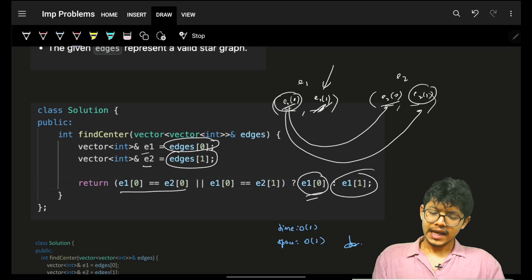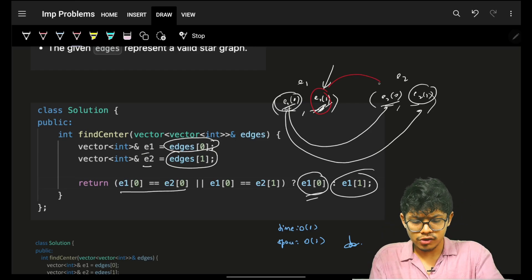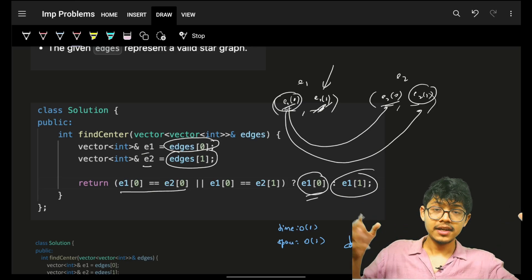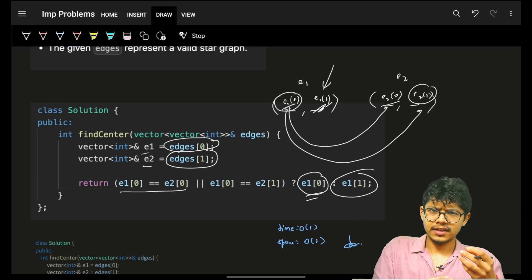And again, if you would say Aryan, what if I want to figure out if there is a star graph or not? Then simply compare: if this is also not equal, then obviously not a star graph. If equal, then you have to compare the entire array.